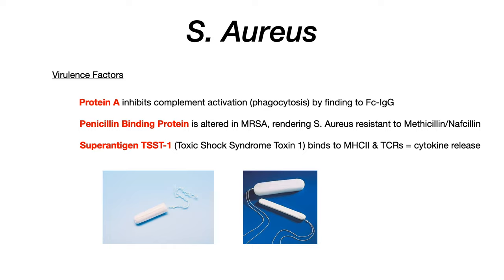Moving on, let's talk about superantigen TSST1 — toxic shock syndrome toxin 1. This toxin binds to MHC2 and T cell receptors. Under normal circumstances, some type of pathogen enters your body, your immune response kicks in and knocks it out with manageable symptoms. But a superantigen like TSST1 stimulates MHC2 and T cell receptors in a way where it just does not turn off — constant overstimulation with no feedback mechanism.